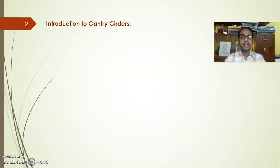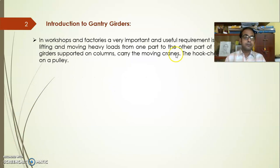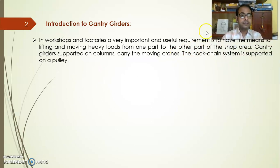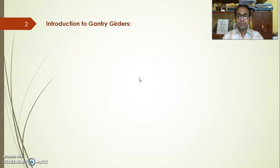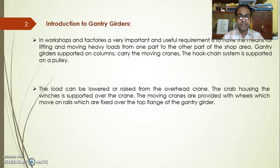First of all, we will discuss what a gantry girder is. A gantry girder is a part of a crane system we have to provide to pass loads within a factory floor or shop floor from one side to another. We cannot give entry to a conventional crane within the shop floor because there is no such provision and there may be congestion, so we have to provide an overhead traveling crane unit within this zone — cranes that travel overhead and are provided with a pulley system to lift loads from one place to another.